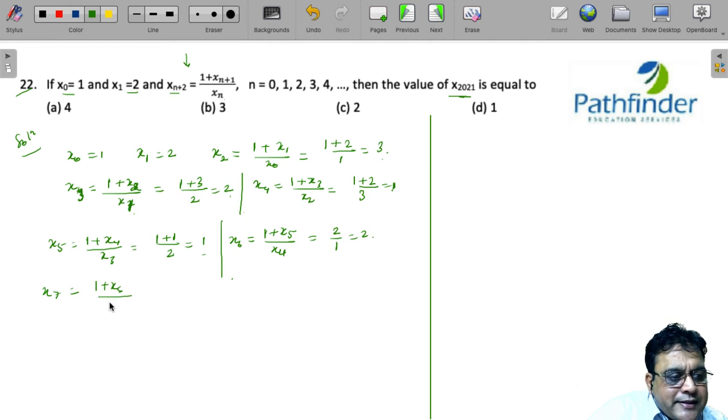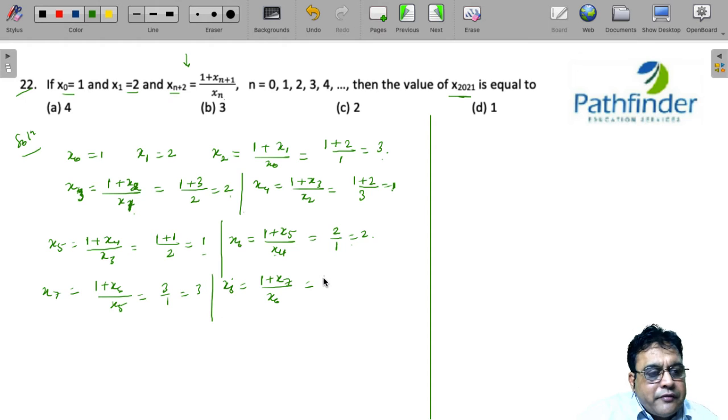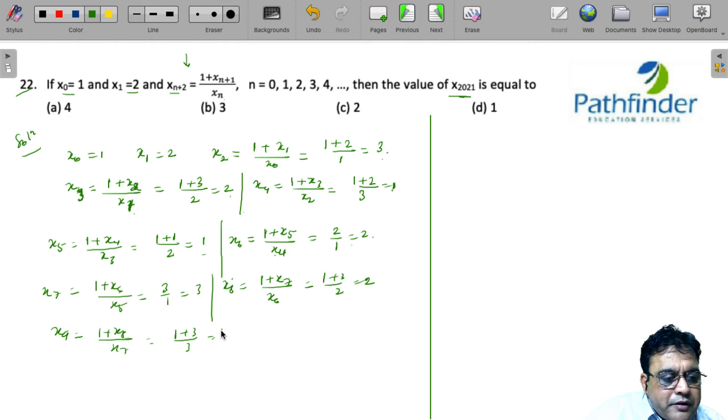x₇ is 1 plus x₆ upon x₅. We have 1 plus 2, 3 upon 1, as 3. x₈ is 1 plus x₇ upon x₆, which is 1 plus 3 upon 2, that is 2. x₉ is 1 plus x₈ upon x₇, so 1 plus 2, 3 upon 3 is 1.